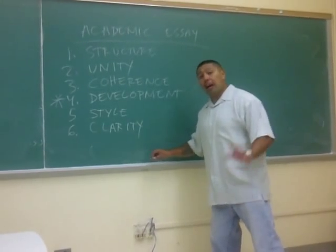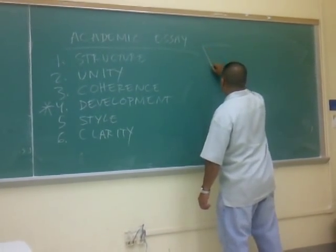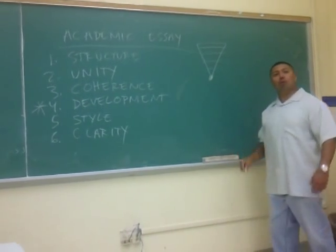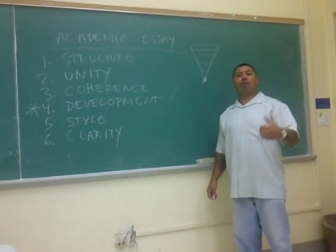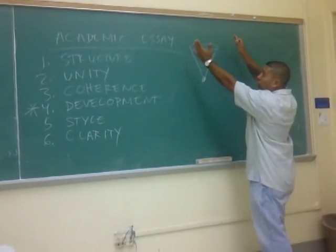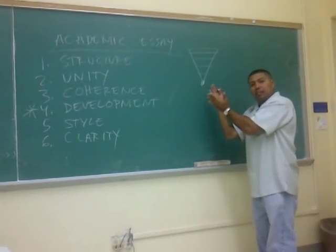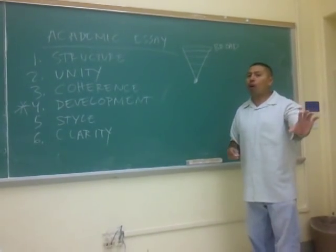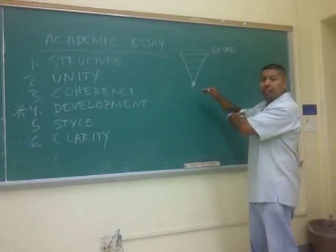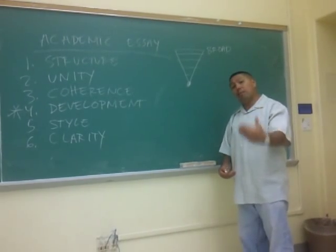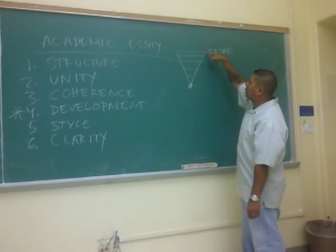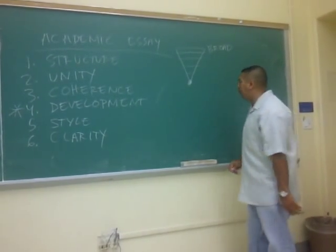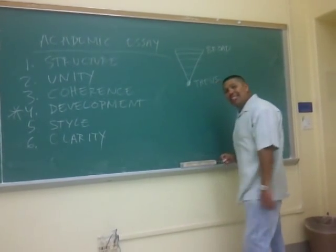For the academic essay, there is first the introductory structure. I am using this reverse pyramid to show you what you are supposed to do in an introduction. It starts off broadly and then narrows down to a specific point. You start with a broad idea. That broad idea should be somewhat related to your thesis because you're introducing your thesis — that is the point of the introduction. If you imagine each one of these lines represents a sentence, you go broad and you whittle down. By the time you finish that first paragraph, you should have your thesis statement at the end.